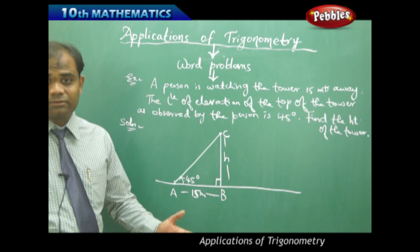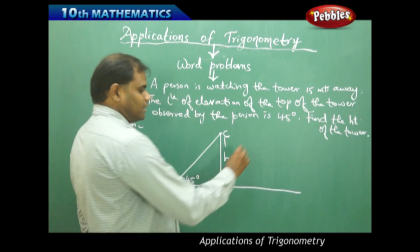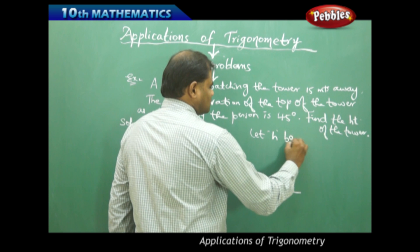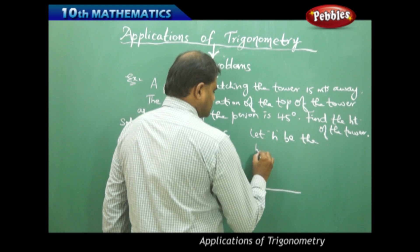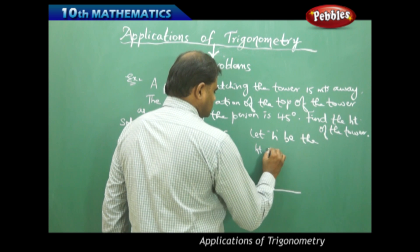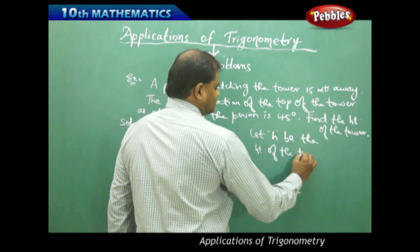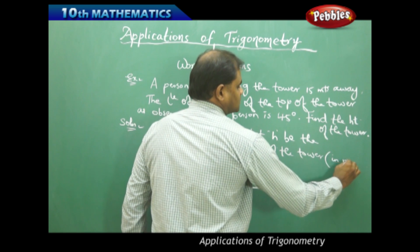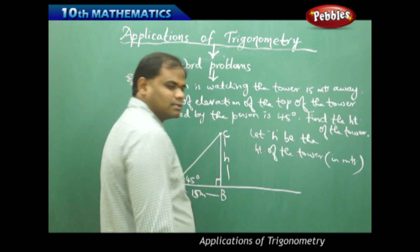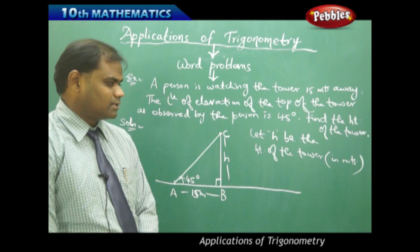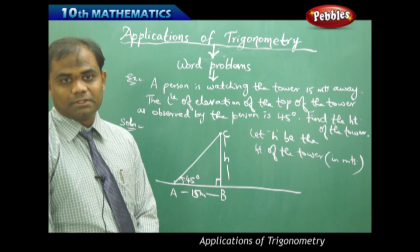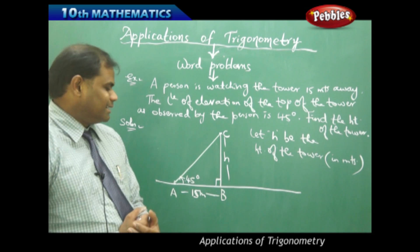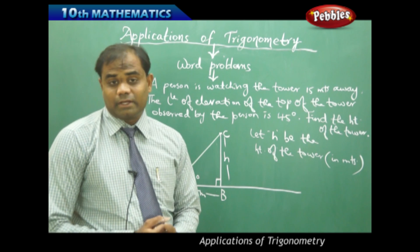Because we don't know the height of the tower, we let h be the height of the tower in meters. So, let h be the height of the tower in meters. Using right-angle triangle ABC, let's see how we can find h.